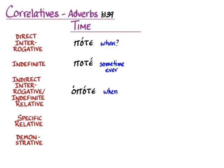If we want the indirect interrogative — asking not directly, but indirectly, 'she asks when something is happening' — that particular 'when' in Greek needs hopote. That is also the word we use for the indefinite relative: 'she goes to the store whenever she needs some milk.' That's indefinite and relative, connecting the rest of the sentence in time. The specific relative is hote, meaning 'when,' used in a temporal clause. And if we want to point to the time, we'll say tote.